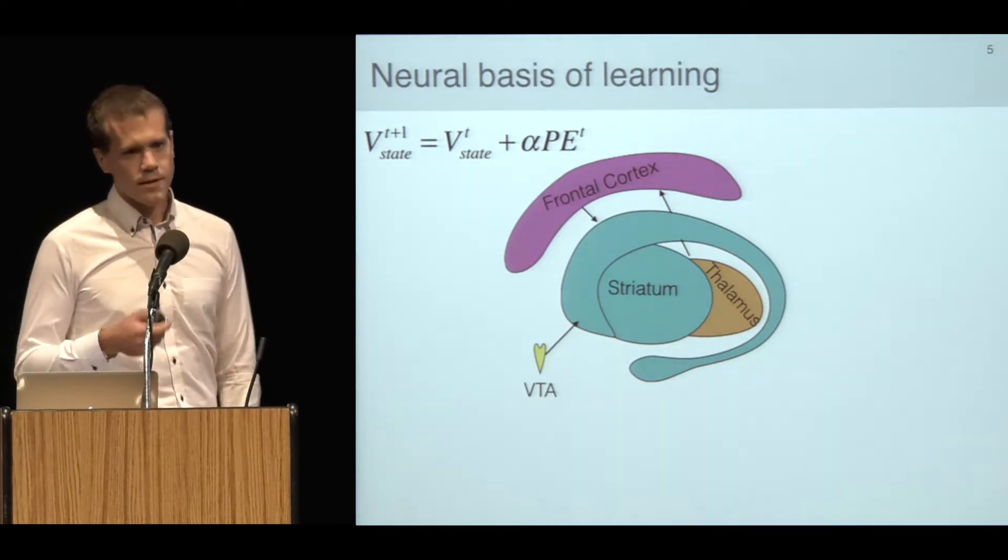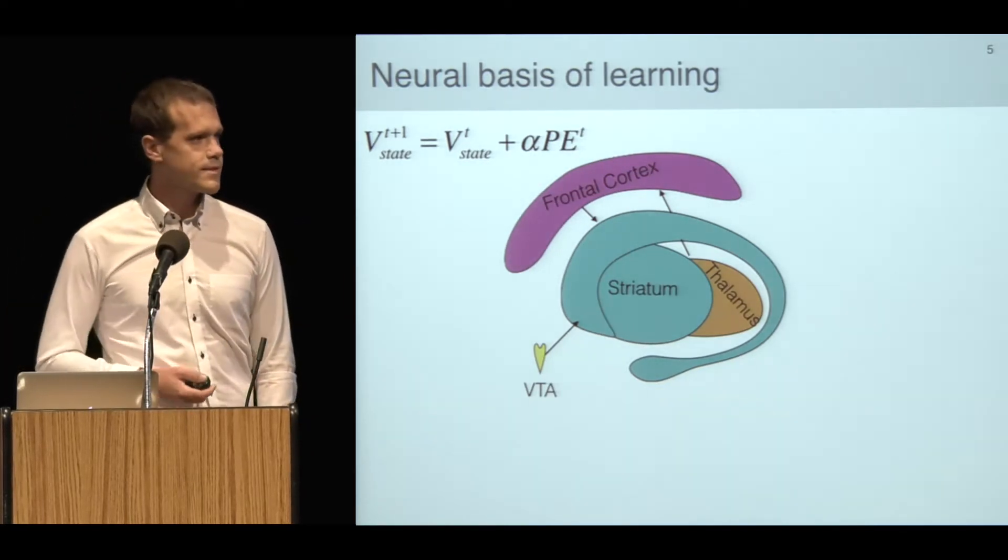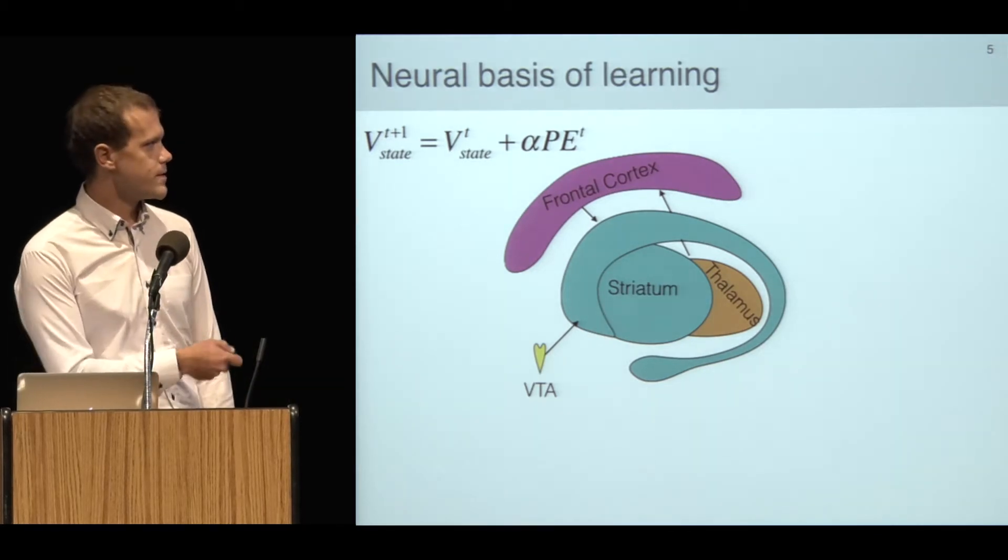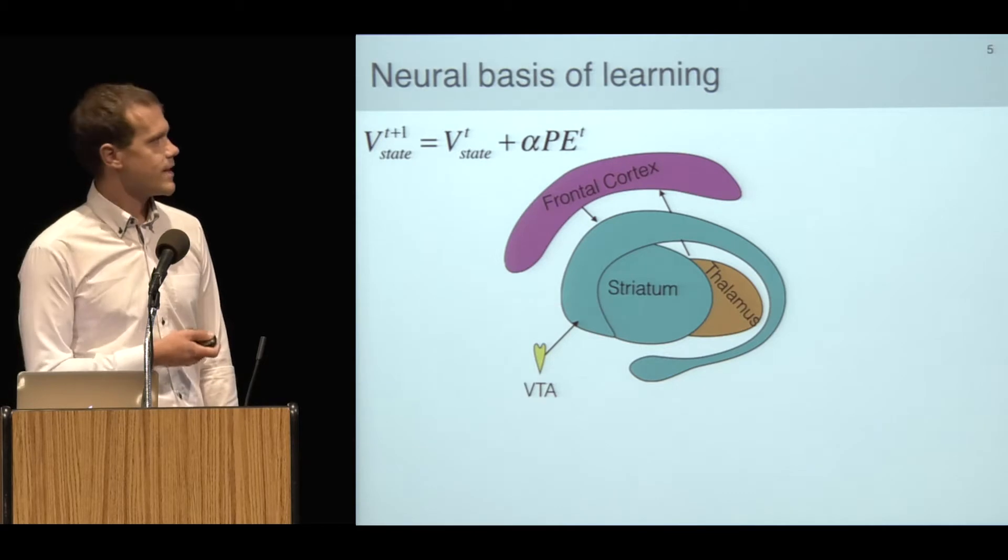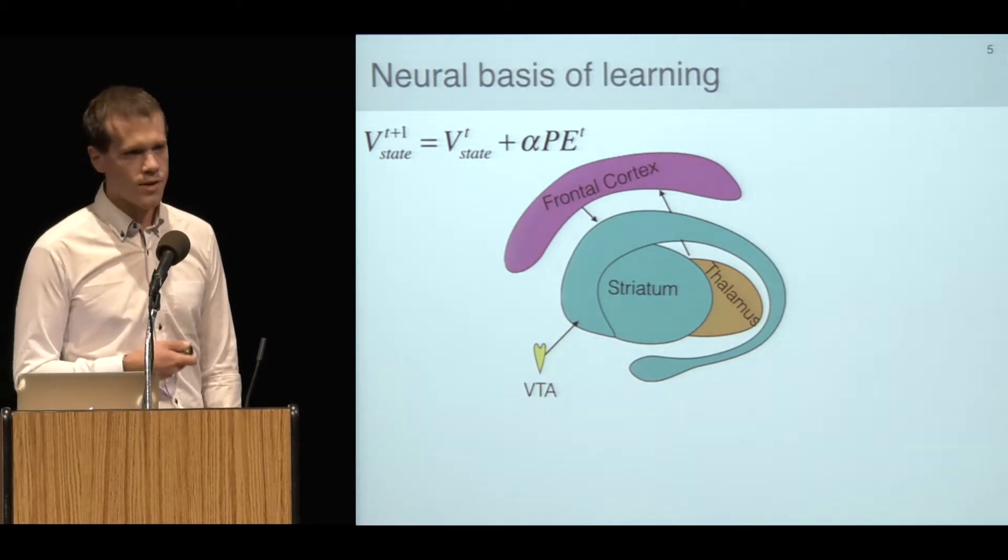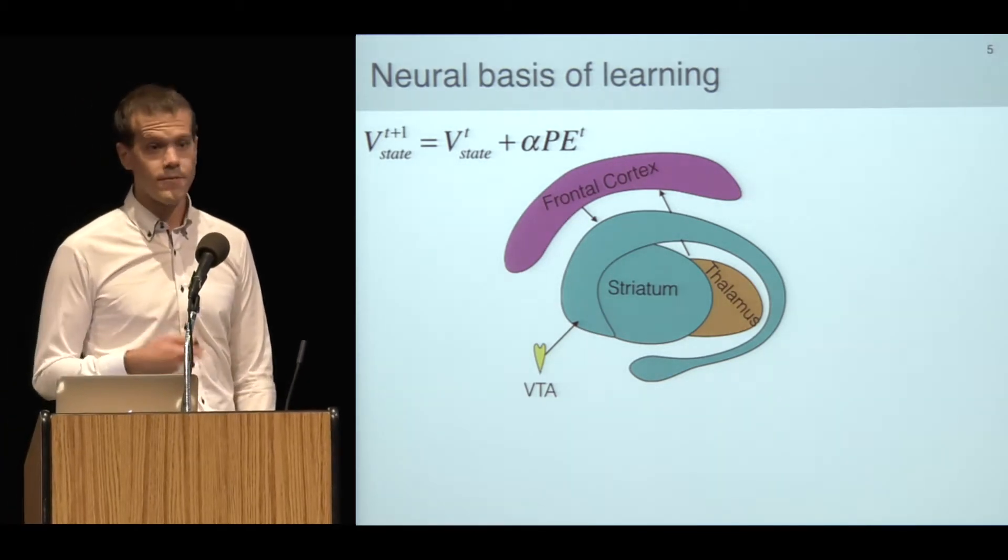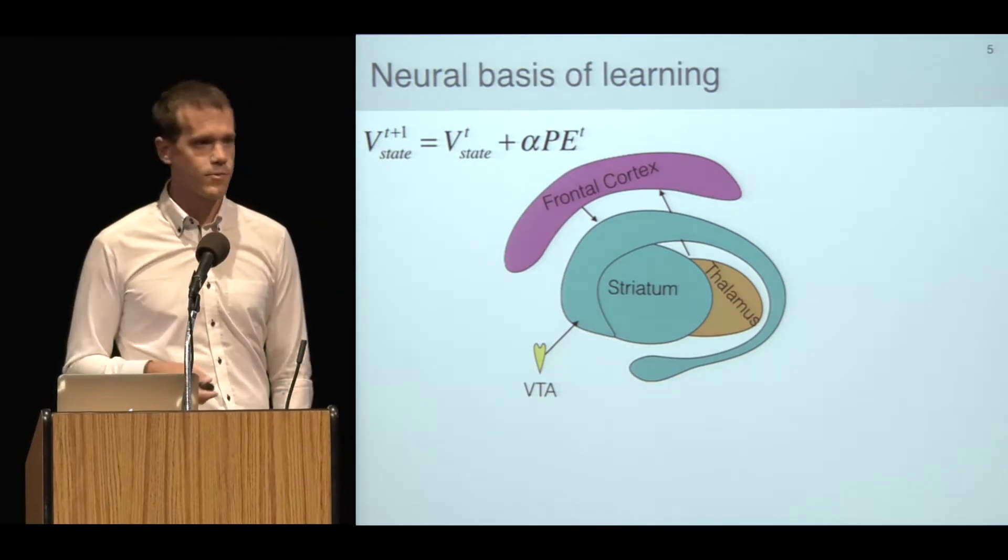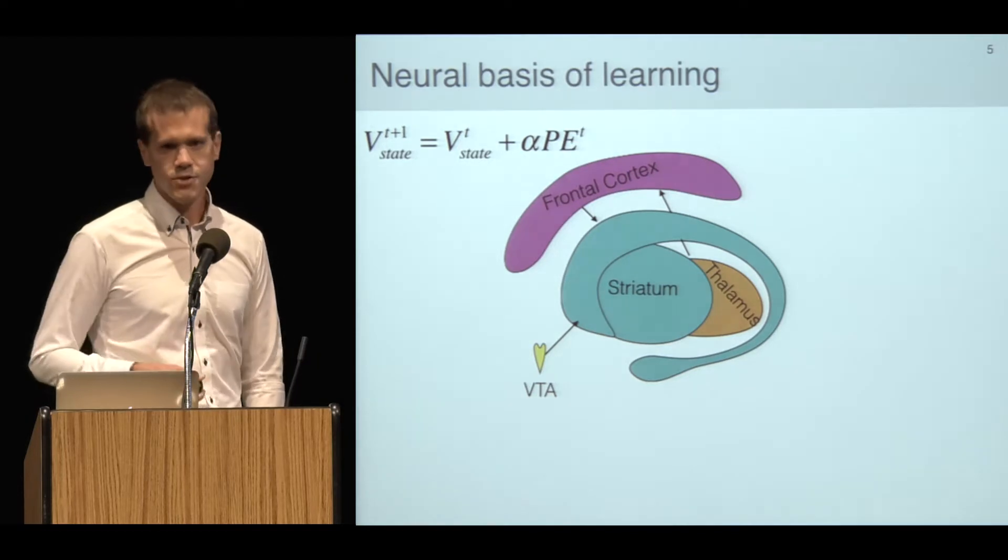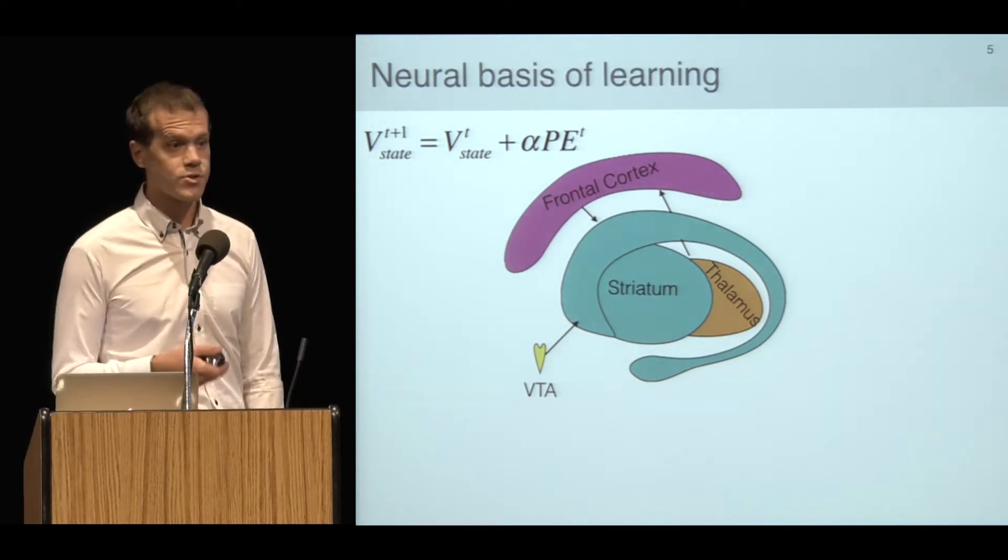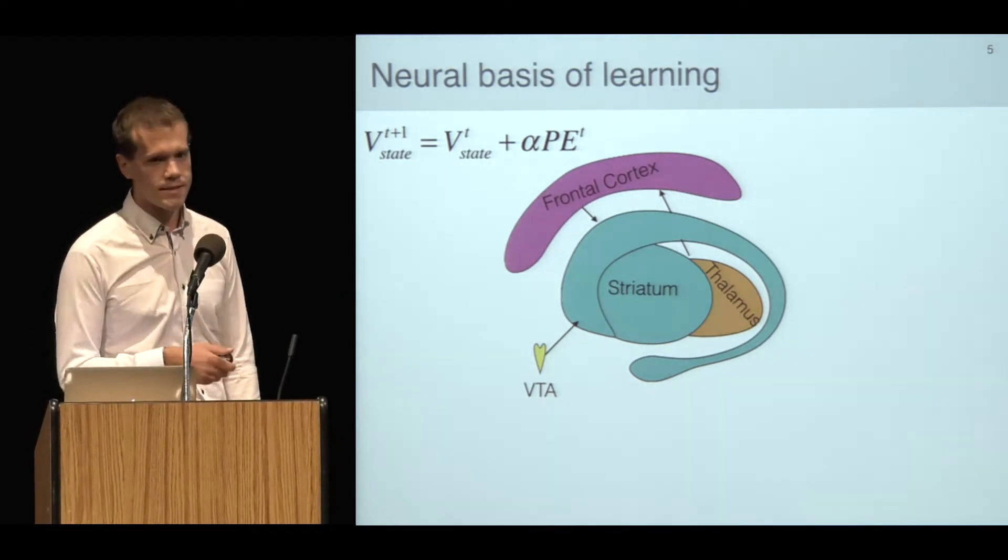We know quite a lot about the neuroscience of how this happens. The prediction errors are coded for by dopamine neurons in the ventral tegmental area. These project, among other places, to the striatum where neurons seem to code the values of states or cues in the world. When dopamine is released on the striatal neurons, their synapses are strengthened such that they fire more strongly the next time that cue or state is encountered.